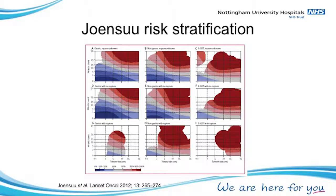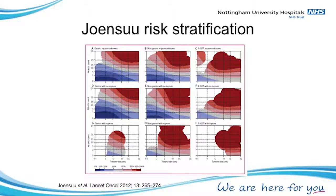The next table is a little confusing, but it's the one I much prefer — the Joensuu/AFIP table. It groups the location of the GIST — stomach versus non-stomach — with size along the bottom, and instead of a fixed cut-off for dividing cells it uses a continuous variable. So I sit there carefully and think: this patient has a GIST in their stomach, no rupture, it was 15 centimetres — I can now go up and identify how many cells were dividing, and it gives me a much better feel for the patient's risk.